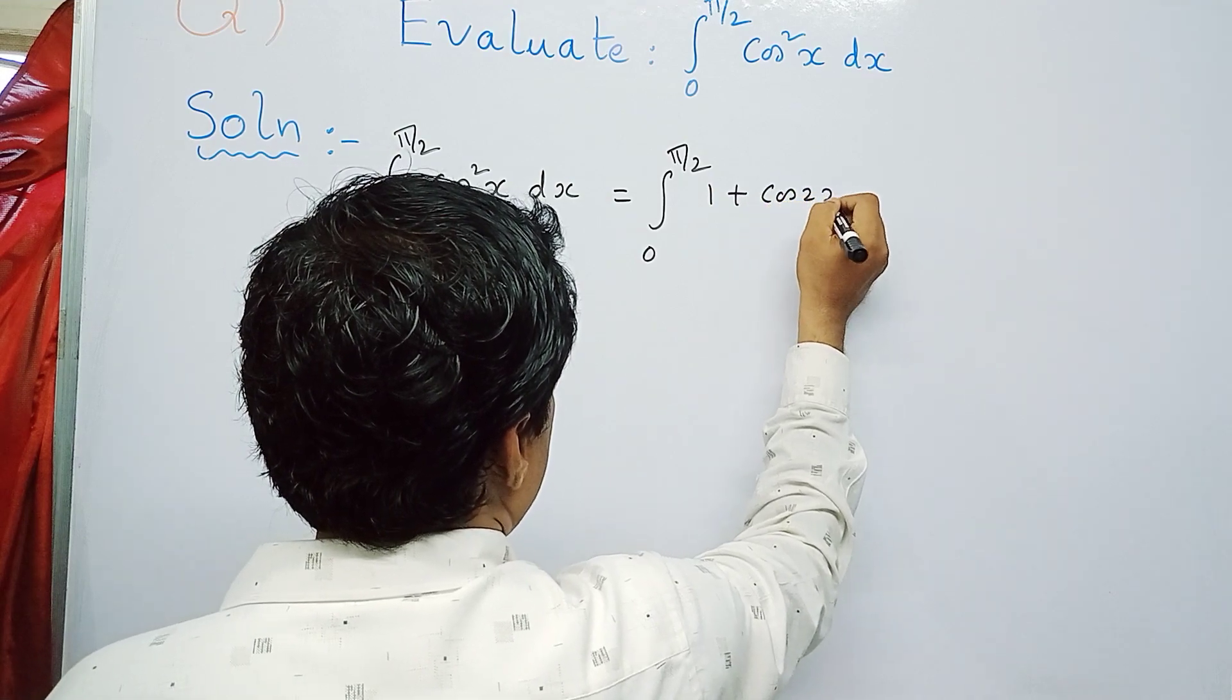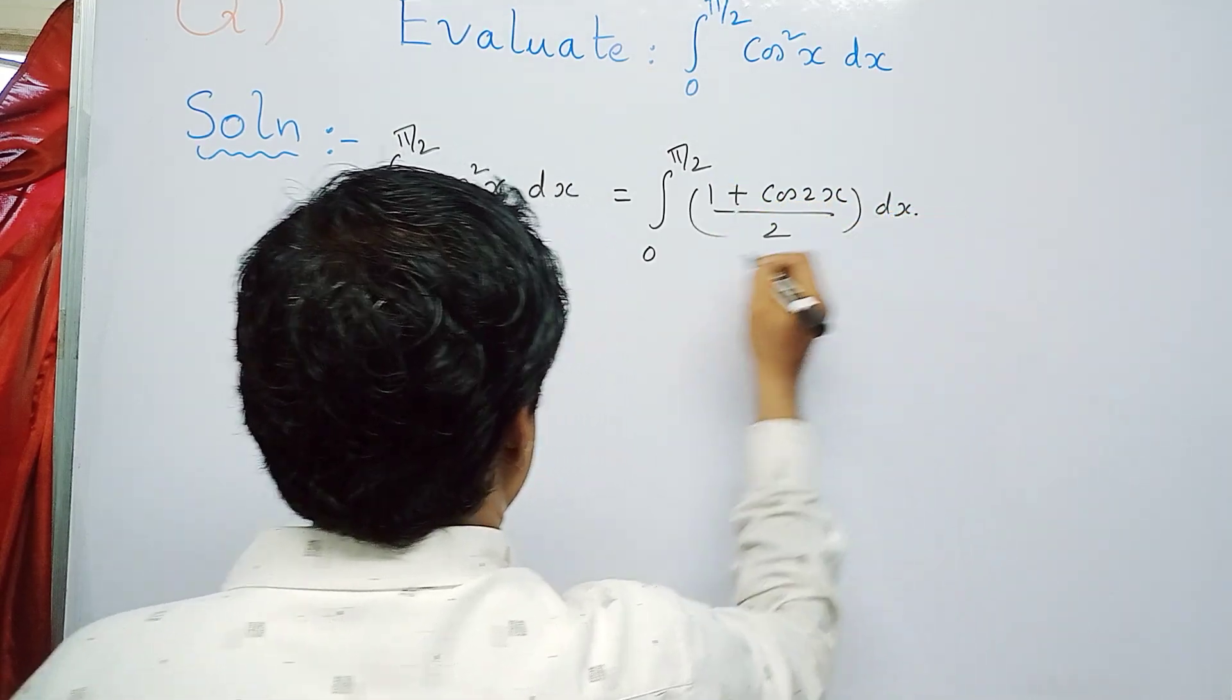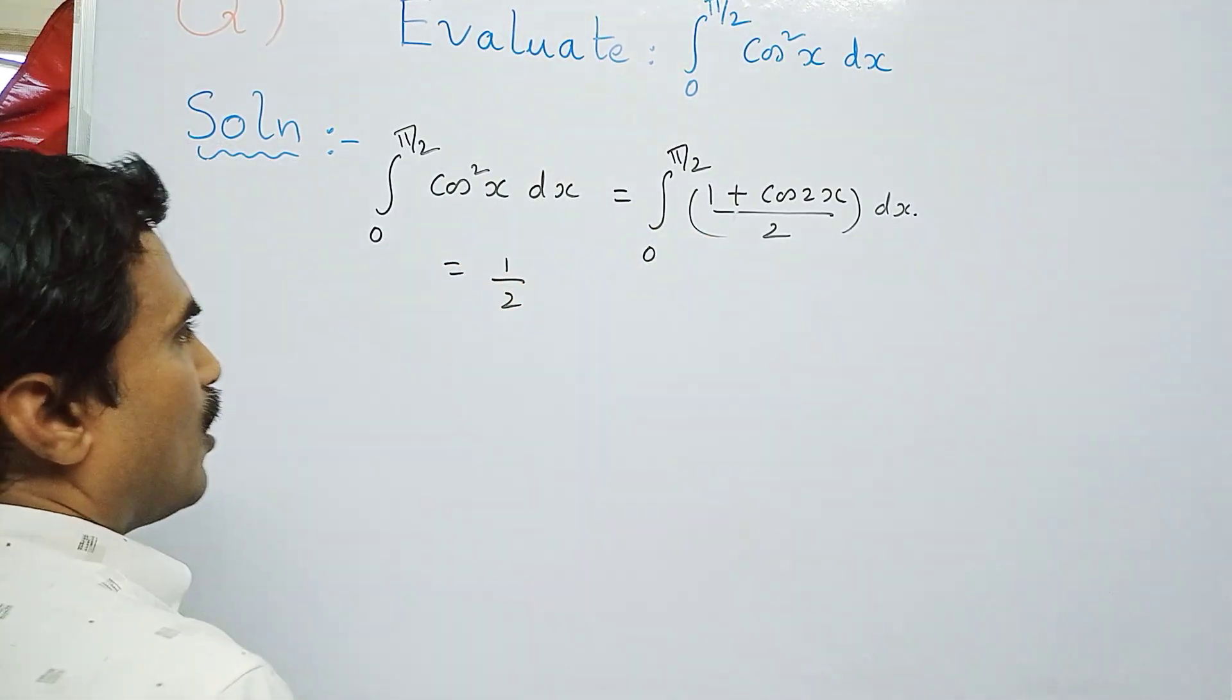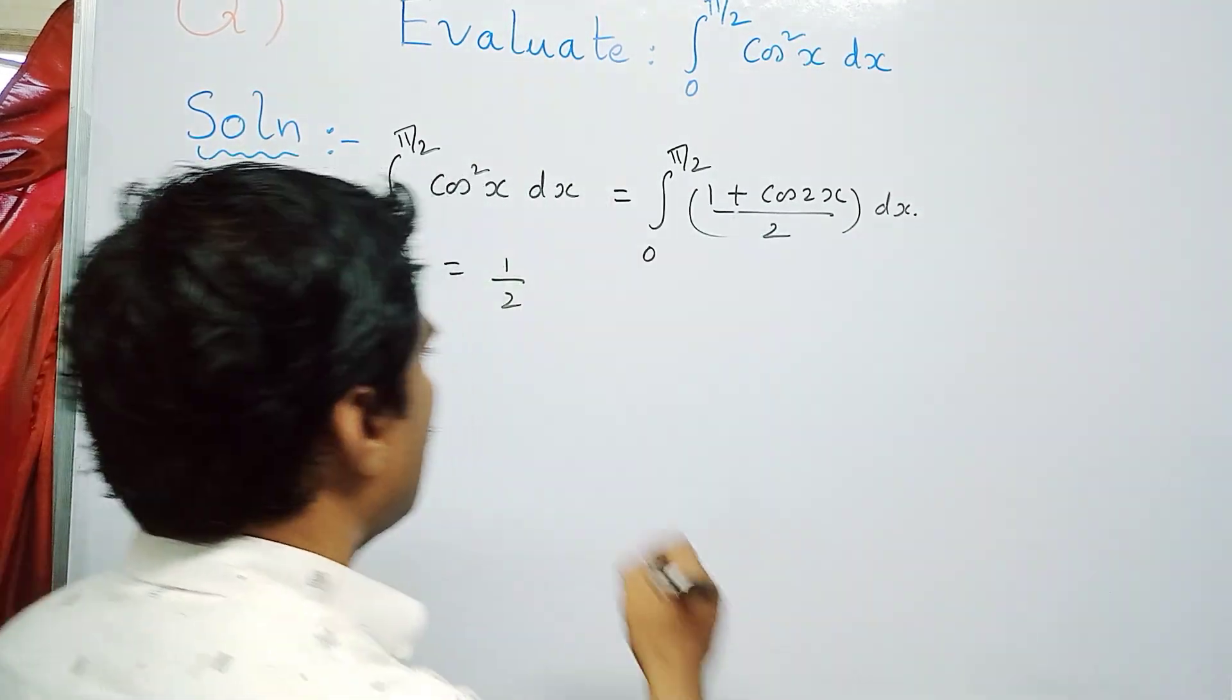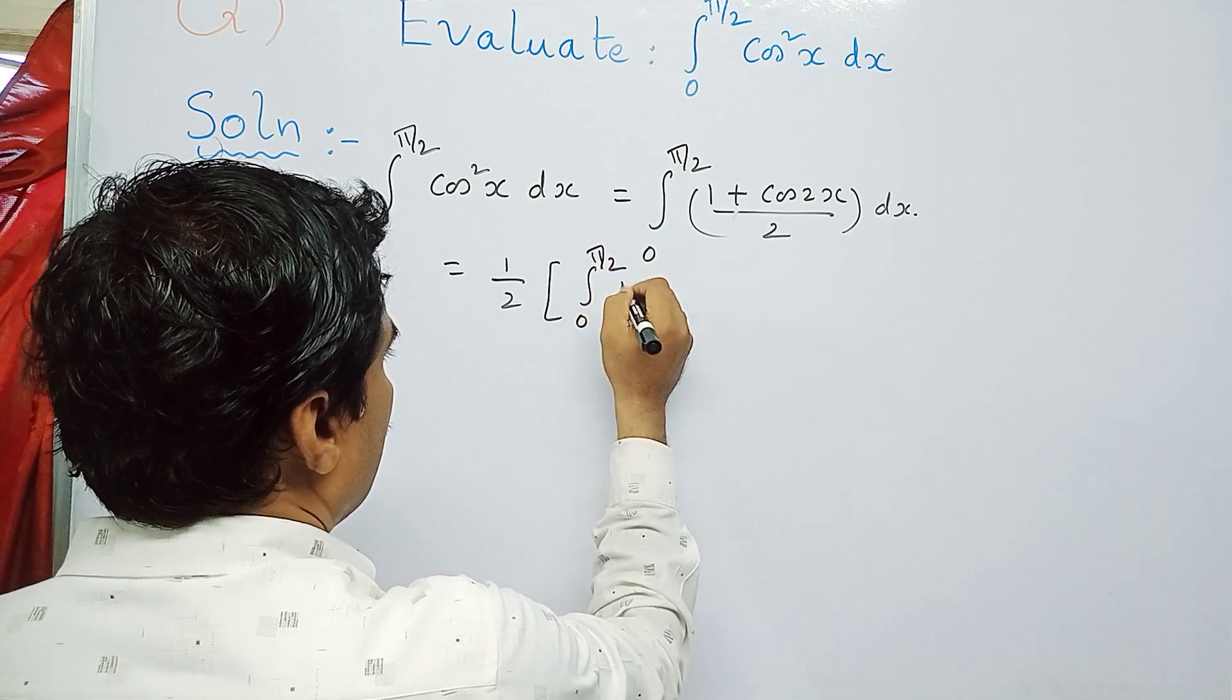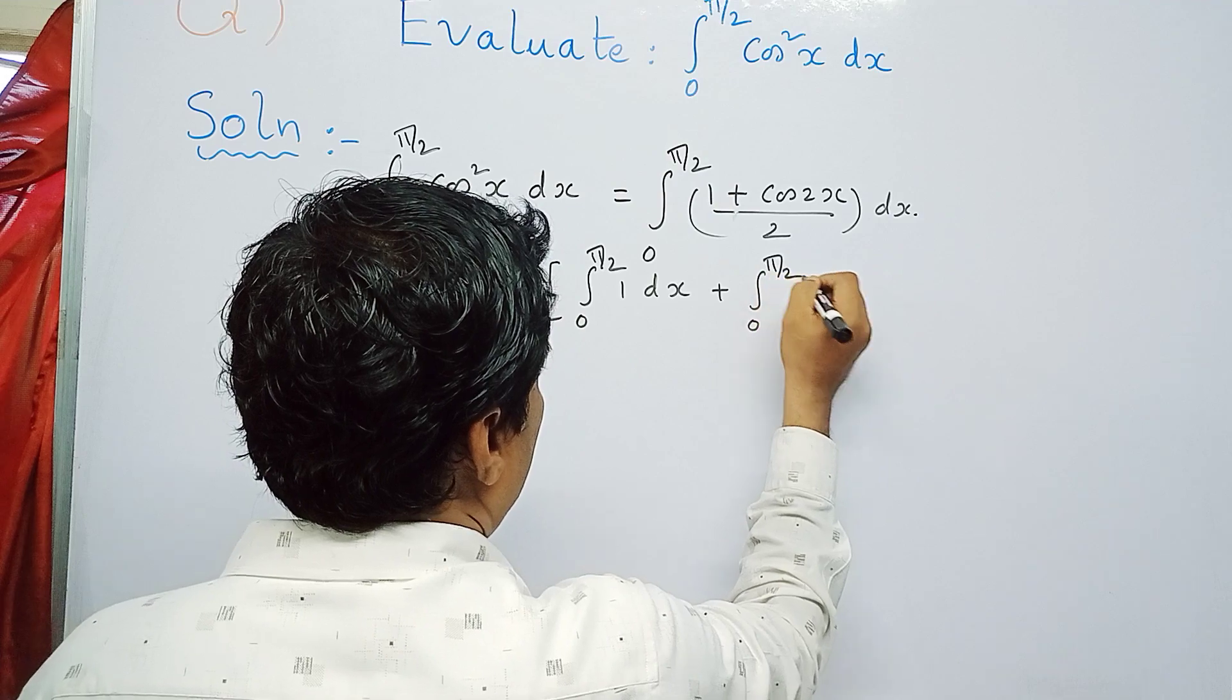Now take this 1/2 outside, that means you can write this as 1/2 times. Now here you need to apply integration decomposition method to solve this integral. So 1/2 times integral 0 to π/2 of 1 dx plus integral 0 to π/2 cos2x dx.